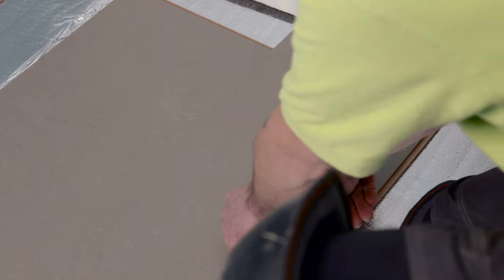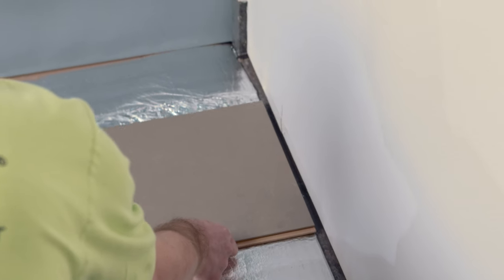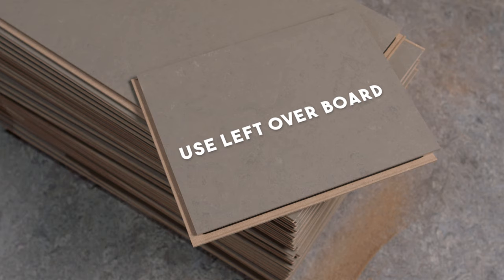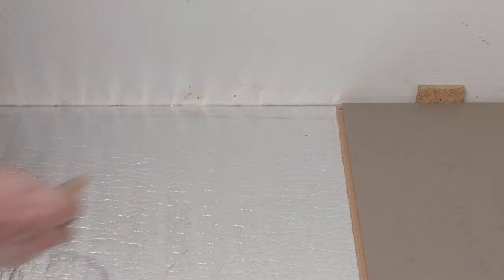Gently slide the row back to the wall and place a 10 mm cube. Now that we have finished the first row, start a new row by placing the leftover board.